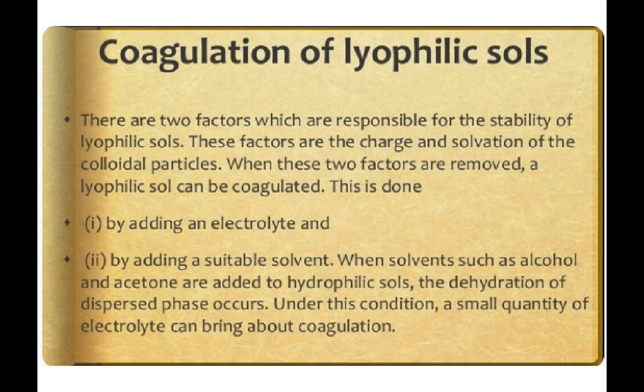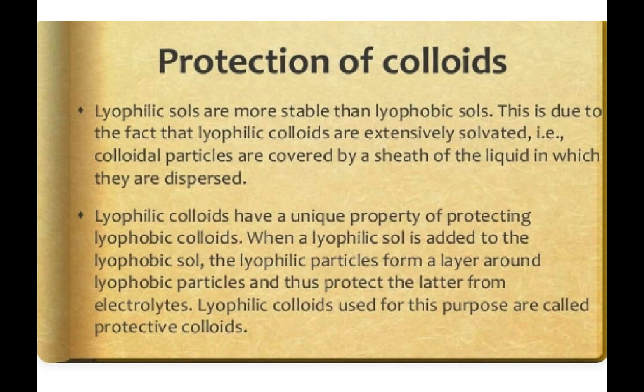How can you coagulate a lyophilic sol by removing those two factors? Firstly by adding an electrolyte, and secondly by adding any suitable solvent like alcohol or acetone to hydrophilic sols — dehydration of the dispersed phase will happen. Under this condition you can add a small quantity of electrolyte to bring about coagulation.